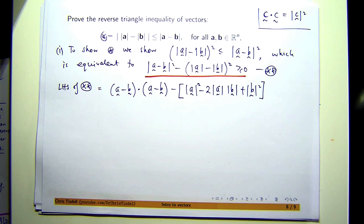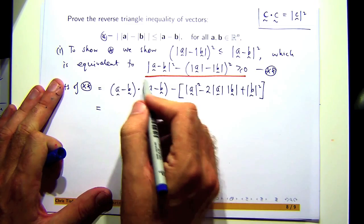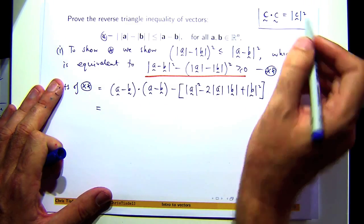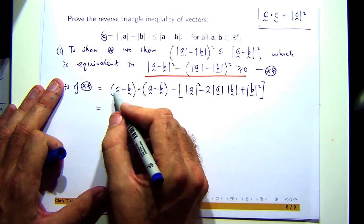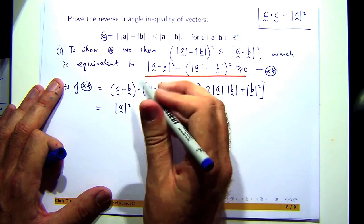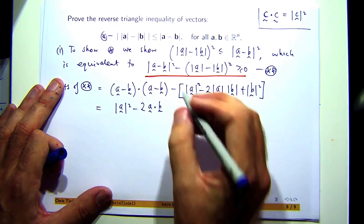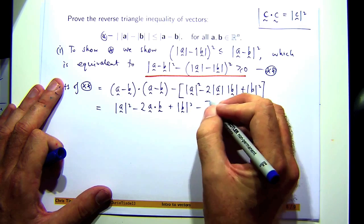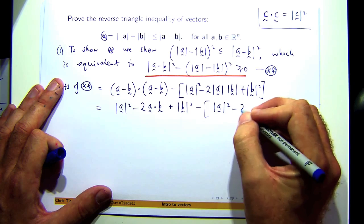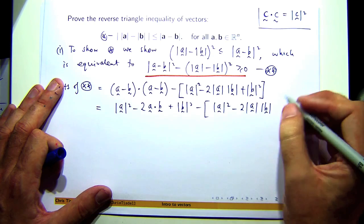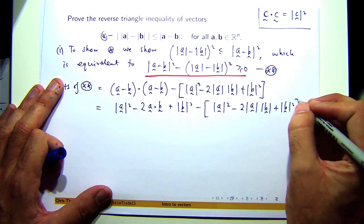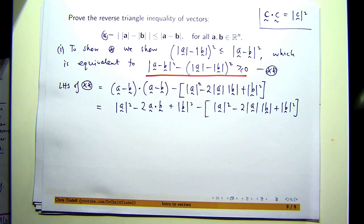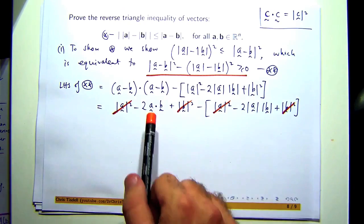So now, I know that I can distribute this dot product over here. So I can expand that in the usual way, keeping the dot product operation. So a dotted with a, that's the length of a squared. A dotted with negative b minus b dotted with a, that's just negative 2 a dotted with b. And then negative b dotted with negative b, the negatives will cancel, and you'll get this. So hopefully you can see now that we're going to get some cancellation. So that's going to cancel with that, that's going to cancel with that, and I'm left with this.